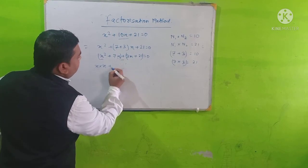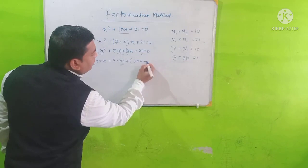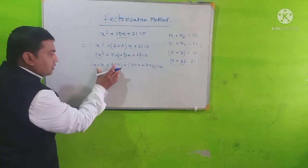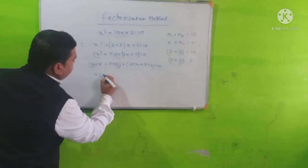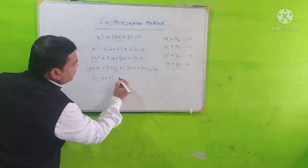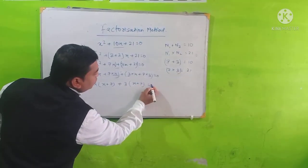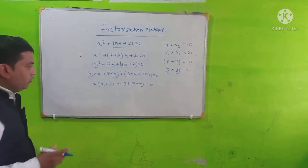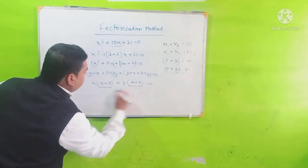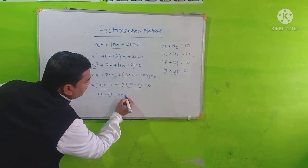We take x as the common factor from the first group to get x(x plus 7), and 3 as the common factor from the second group to get 3(x plus 7), giving us x(x plus 7) plus 3(x plus 7) equals 0. Taking (x plus 7) as the common factor, we get (x plus 7)(x plus 3) equals 0.